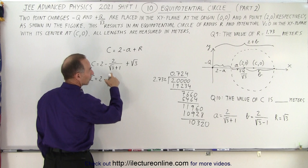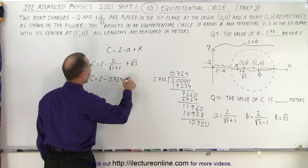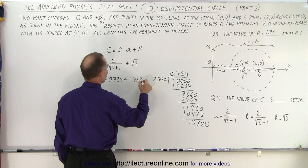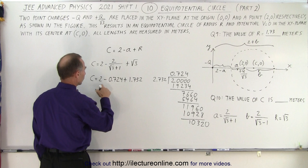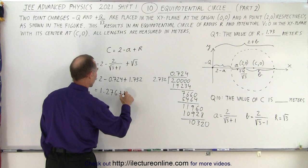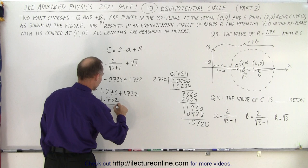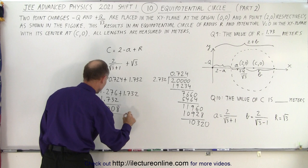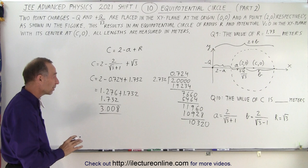So that means that C is equal to 2 minus 2 divided by that. That gives me 0.724 plus the square root of 3, which is 1.732. And let's see what we get. So that would be equal to 2 minus this, that would be 1.276 plus 1.732. 1.732. That would be 8. That would be 0.1. That would be 0. That would be 3. Close enough.